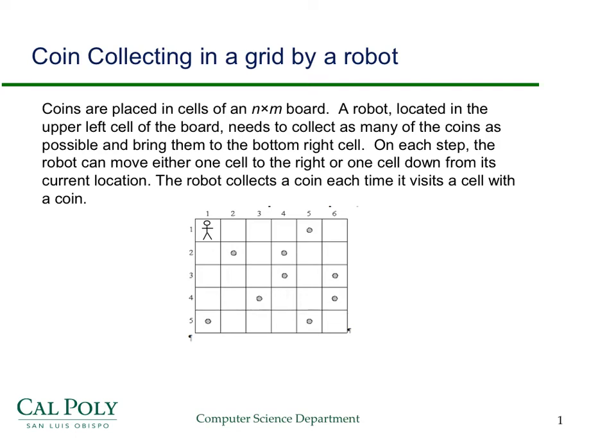In this screencast, I want to talk about a toy problem, but one that illustrates an important concept in dynamic programming — namely, when the function you're trying to maximize or minimize involves more than one argument. This screencast assumes you're already familiar with dynamic programming, or that you've watched my introduction to dynamic programming screencast. I'm going to go through the example relatively quickly, just illustrating the important points for when you have a dynamic programming problem that requires more than one argument.